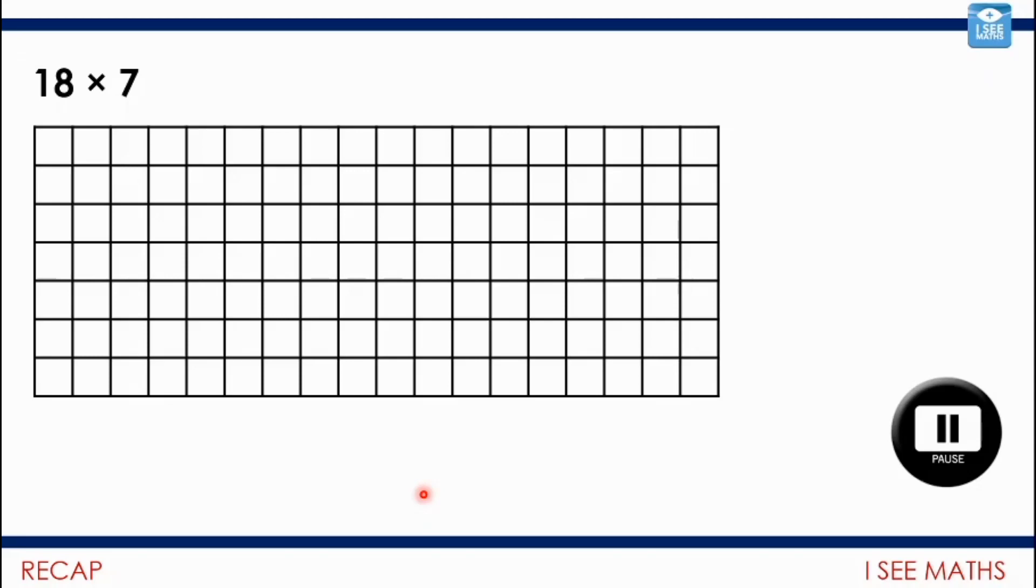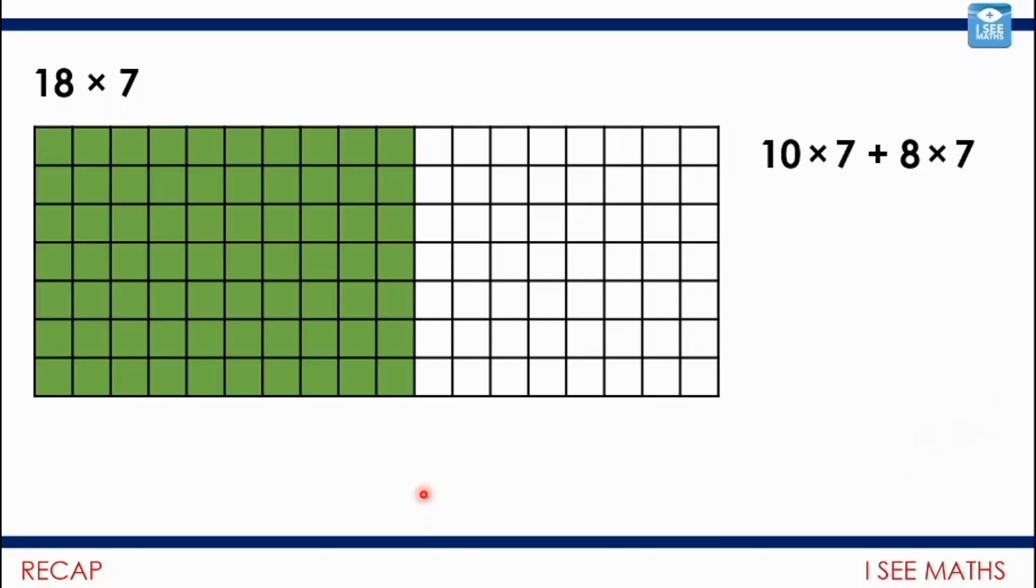Okay, let's have a look at a few possibilities. So it could be that you break that grid up into, you break the 18 up into 10 lots, into 10 and 8. So 10 lots of 7, which is the green area, 70, and 8 lots of 7, 56 in the white area, and just add all that together.